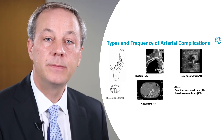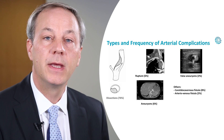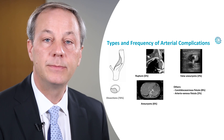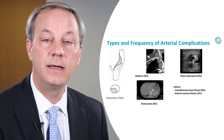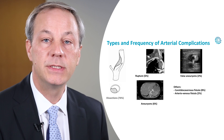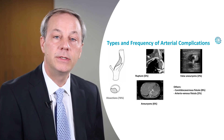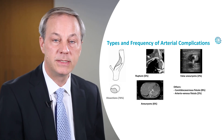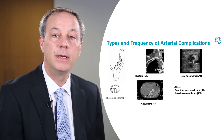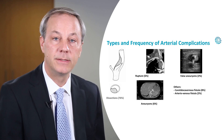Spontaneous arterial rupture is a characteristic feature of vascular EDS. However, ruptures are not constant and are far less frequent than dissections and aneurysm formation. Ruptures occur predominantly in arteries that are normal in size and shape, rather than in previously dissected or aneurysmal arteries.